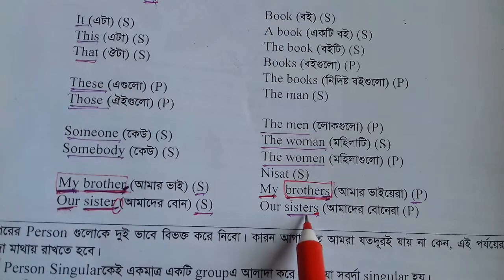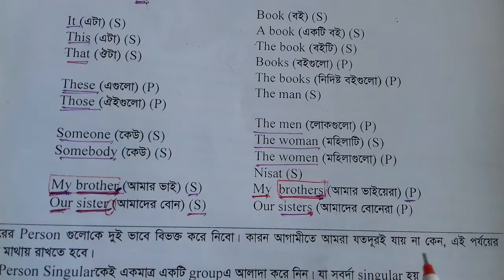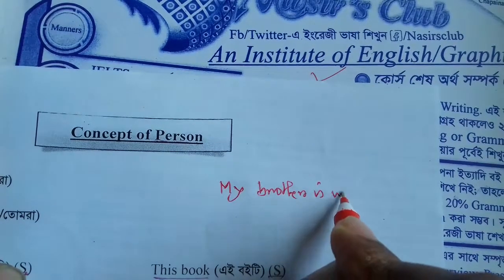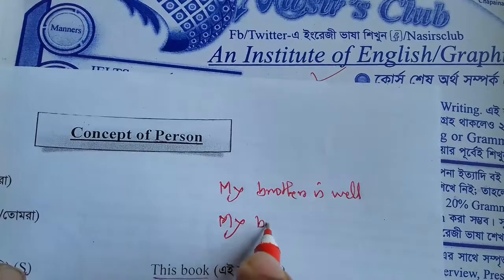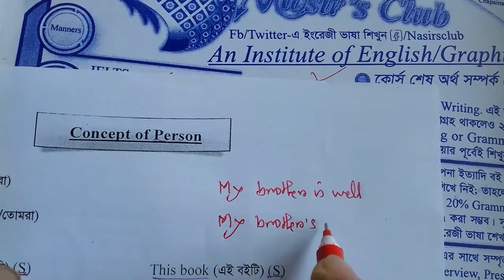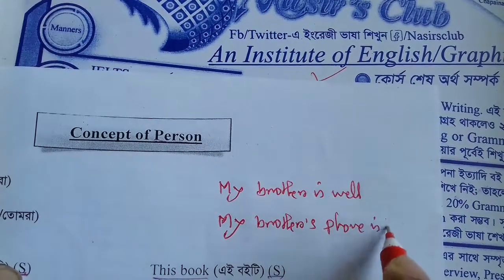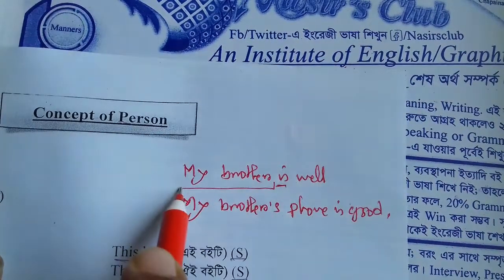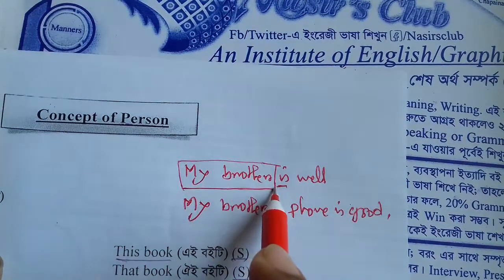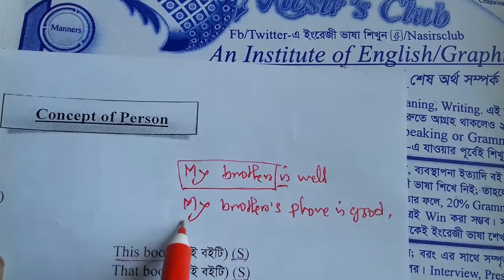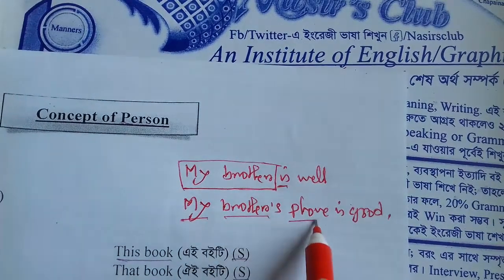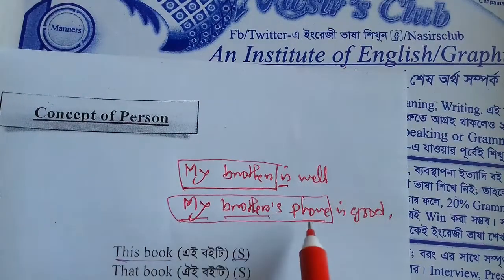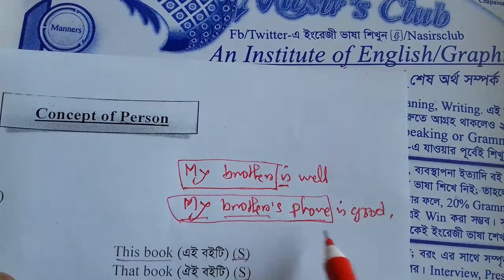And here is another example: 'our sisters.' We have so many sisters, because we can see the 's' at the end of the noun 'sisters' — so that is definitely plural. Now take a look: 'my brother's phone is good.' Dear viewers, the verb is 'is,' so the words before the verb are the subject. Here 'my,' another word, and another word — so with these three words the subject can be formed, and that's why this is the subject.